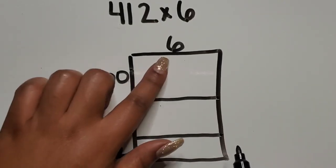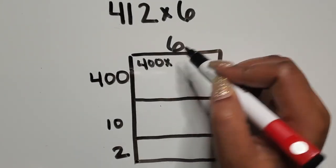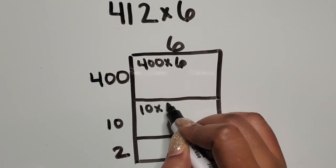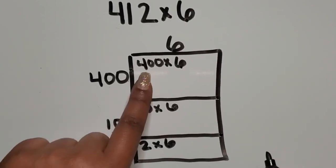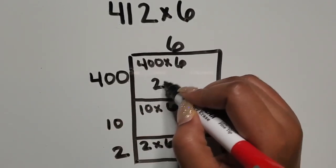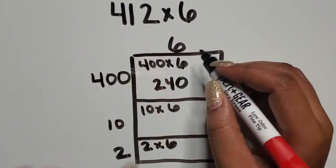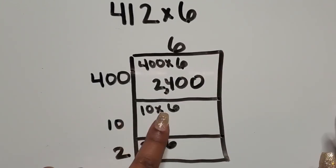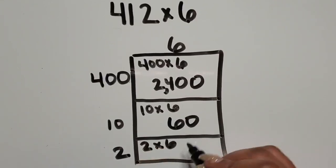So again, I'm going to write my equations or my expressions inside the rectangle. So 400 rows of 6, 10 rows of 6, 2 rows of 6. 4 times 6 is 24, 10 times greater than that is 240, 10 times greater than that is 2,400. 10 rows of 6 is 60, and 10 rows of 6 is 12.